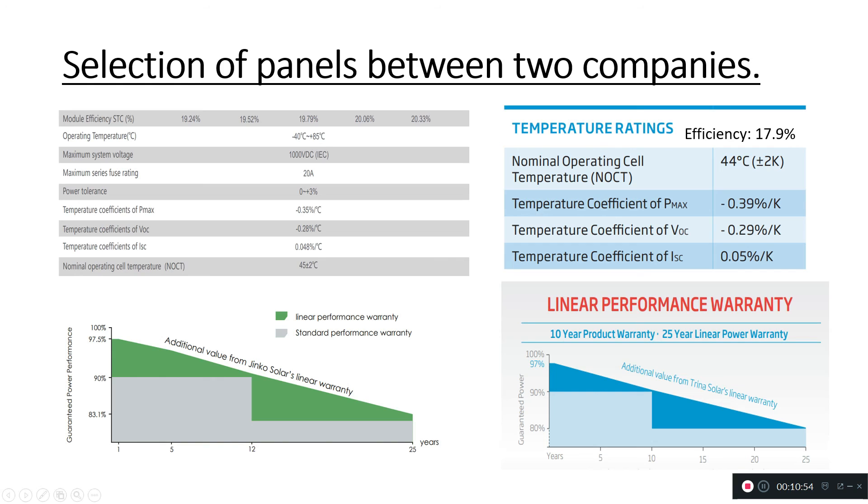Next thing you need to consider is the performance warranty and generation warranty. Basically now it has become industry standard that most companies give such information and they give you assurance that their module will give you almost 81 or 80 percent of output at the end of 25 years. For this particular panel, the output can be around 82 or 81 percent at the end of 25 years.